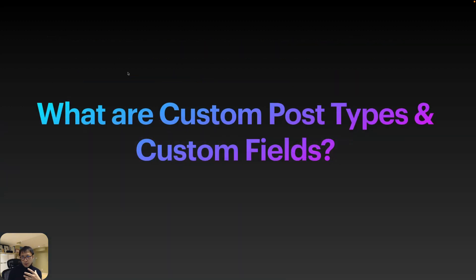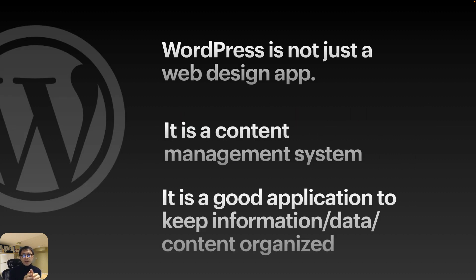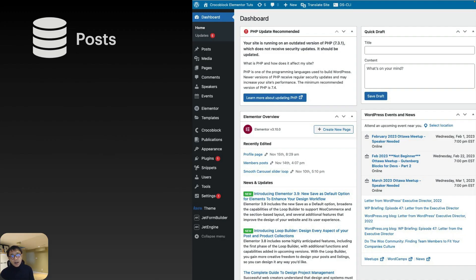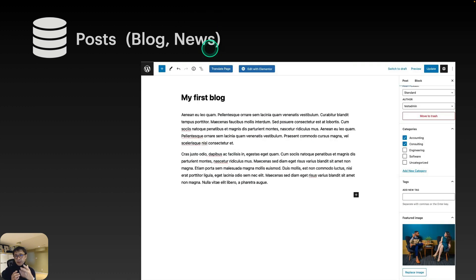WordPress is not just a web design app — it is a content management system, which means it's a good application to keep information, data, and content organized. By default, we have posts, media, and pages. With posts, people typically write blogs and news articles.